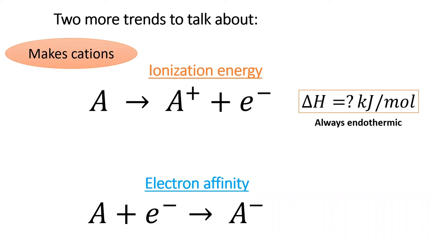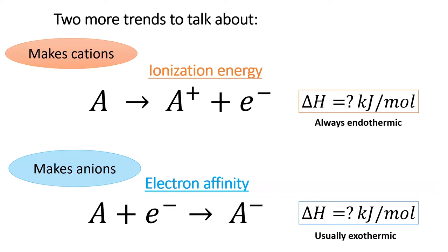A low ionization energy means it is easy to remove an electron. Section 7.5 will discuss the process whereby an atom gains an electron, forming an anion. This process is usually exothermic, but it depends on the element and the energy levels.